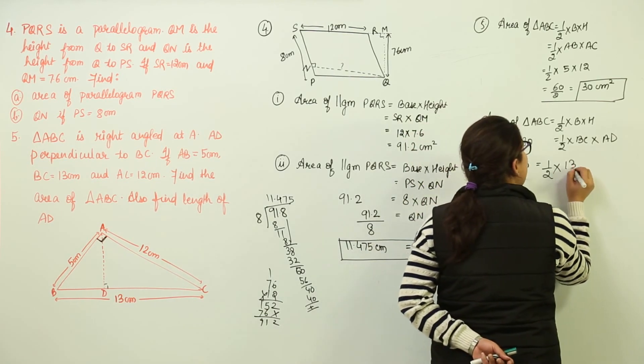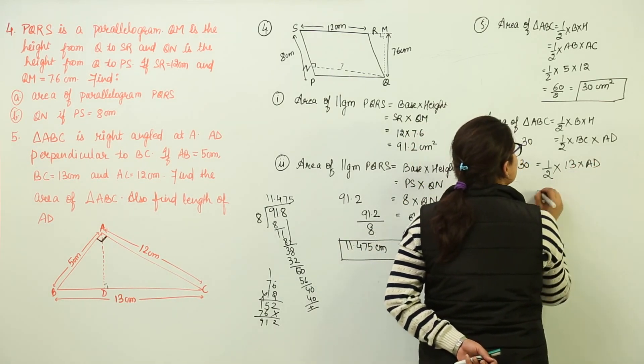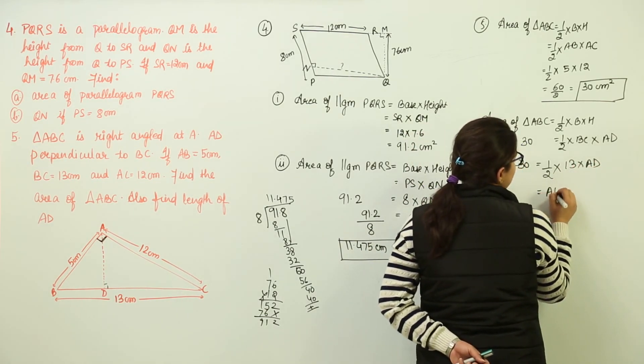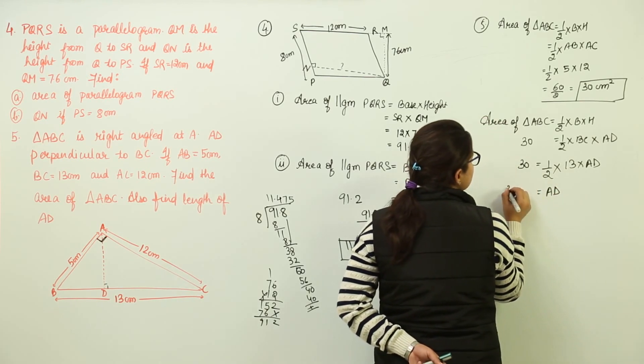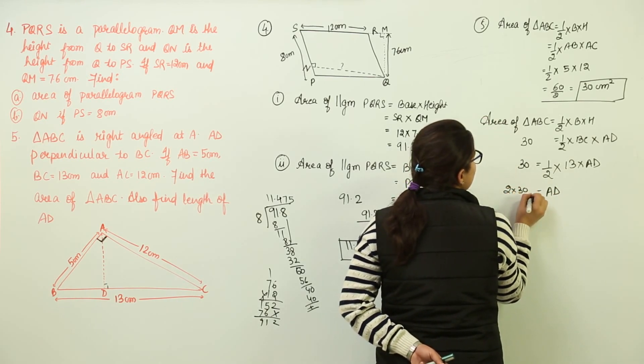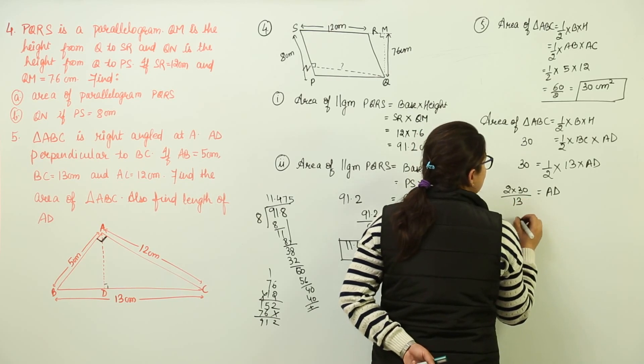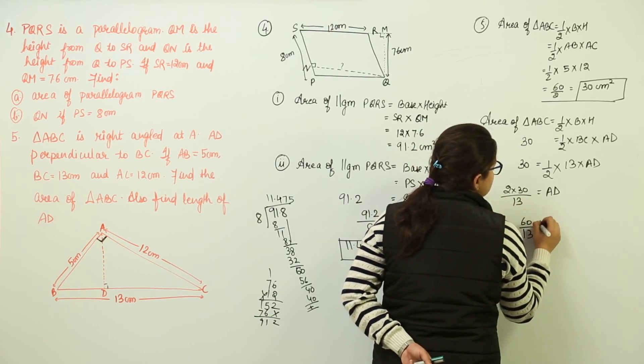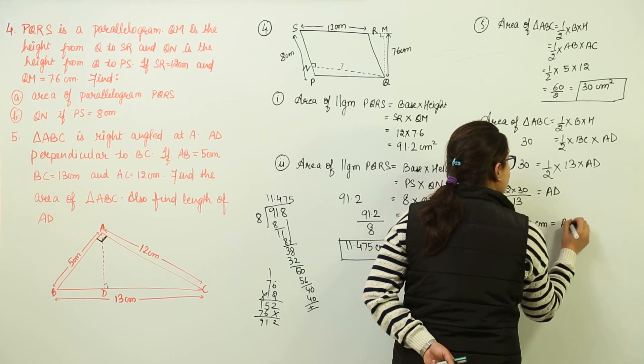So we get AD equal to 2 into 30 whole upon 13. Now you get 60 upon 13 centimeters as AD.